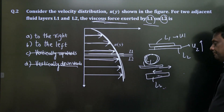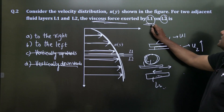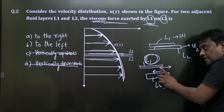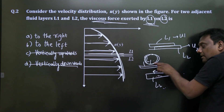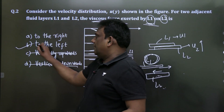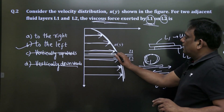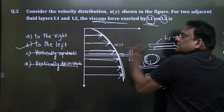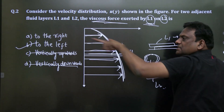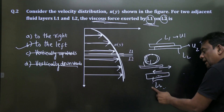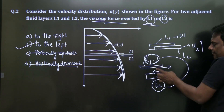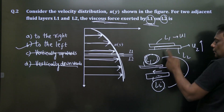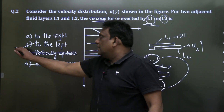The force exerted by L1 on L2: since L1 is the top layer with lower velocity, it exerts a retarding force. As the flow is in the rightward x-direction, the retarding force is to the left. Therefore, the force exerted by L1 on L2 is to the left — option B is the correct answer.